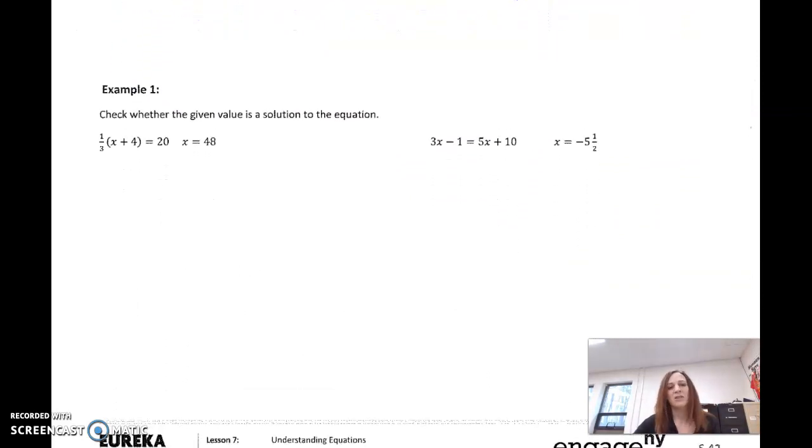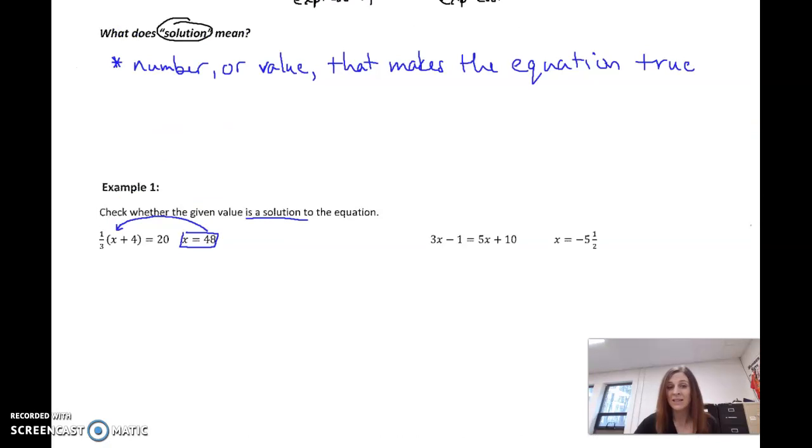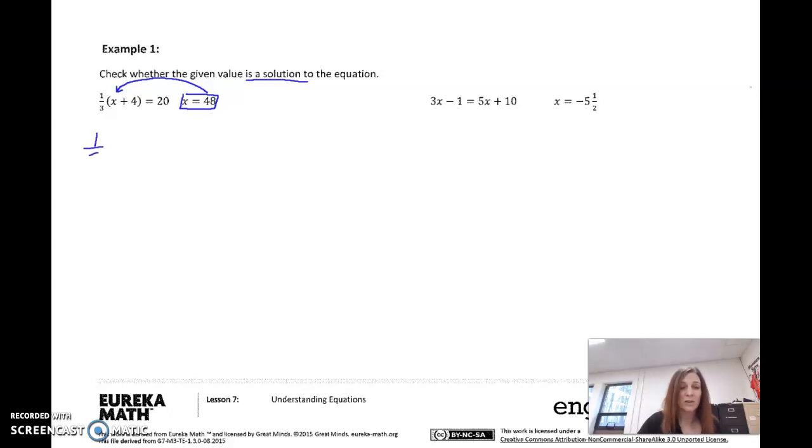Let's talk about what it means to be true. It says check whether the given value is a solution to the equation. So what they're saying is, if you take 48 and you plug it in here for x, so if x equals 48, is it a solution? Does it make it true? So what you do is you plug in and see. So I'm going to go 1 third times the quantity x, but x is 48, plus 4, and I'm wondering, does that equal 20? Well, order of operations here, 48 plus 4 is 52. And if I go 1 third times 52, does that equal 20?